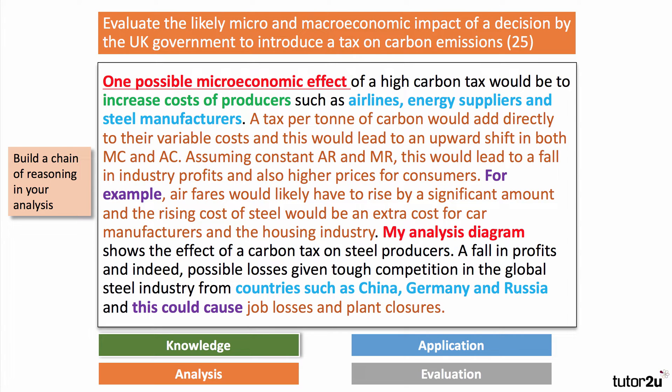Starting with a microeconomic effect — signpost it clearly. One effect would be to increase costs of producers such as airlines, energy suppliers, and steel makers — businesses that use a lot of carbon. A tax per tonne of carbon would add directly to their variable costs, leading to an upward shift in both marginal cost and average cost. Assuming constant AR and MR, this would lead to a fall in industry profits and higher prices for consumers — for example, airfares or car manufacturing costs might go up. My analysis diagram shows the effect of a carbon tax on steel producers, with a fall in profits and possible losses, given global price competition from countries like China, which could cause job losses and plant closures.